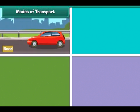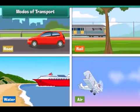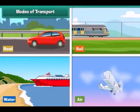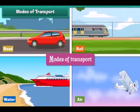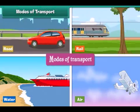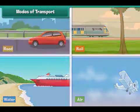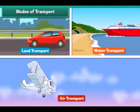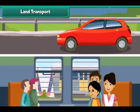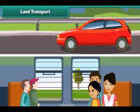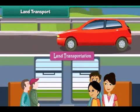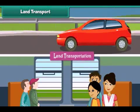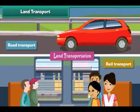Goods, animals and people can be transported by road, rail, water or air. Different mediums used for transportation are known as the modes of transport. Modes of transport can be broadly divided into three categories: land transport, water transport, and air transport. The movement of goods and passengers on land is known as land transport. Land transport is of two types: road transport and rail transport.